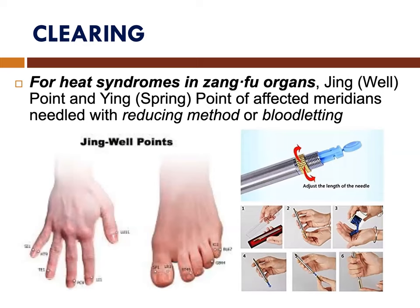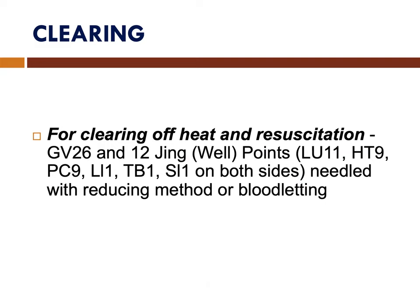On the foot, we have Spleen-1, Liver-1, Stomach-45, Kidney-1 on the sole, GB-44, and Bladder-67. For bloodletting points, we may use the lancing device usually used for testing blood sugar. For clearing of heat and resuscitation, we use GV-26 and the 12 jingwell points from Lung-11 to Heart-9, Pericardium-9, LI-1, Triple Burner-1, and SI-1 on both sides of the hand, which are needled with reducing method or bloodletting.